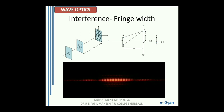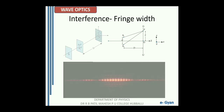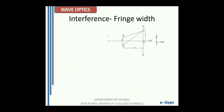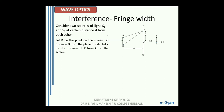Now we move further with the derivation. Consider two coherent sources of light S1 and S2 placed at a distance d from each other. Let P be a point on the screen at distance capital D from the plane of slits, and let x be the distance of P from point O on the screen. O is the equidistant point from the two sources S1 and S2.